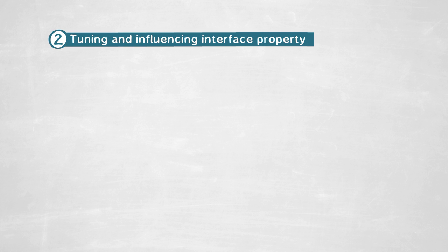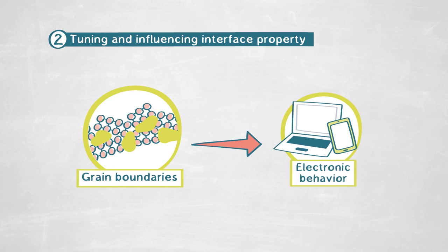How do they influence the electronic behavior? We still don't know. But it will give us a tool to tune the properties of the interface and influence the material properties. Looking back to copper interconnects in your smartphone, maybe we can utilize grain boundary phase transformations in the future to enhance the performance and lifetime of these devices.